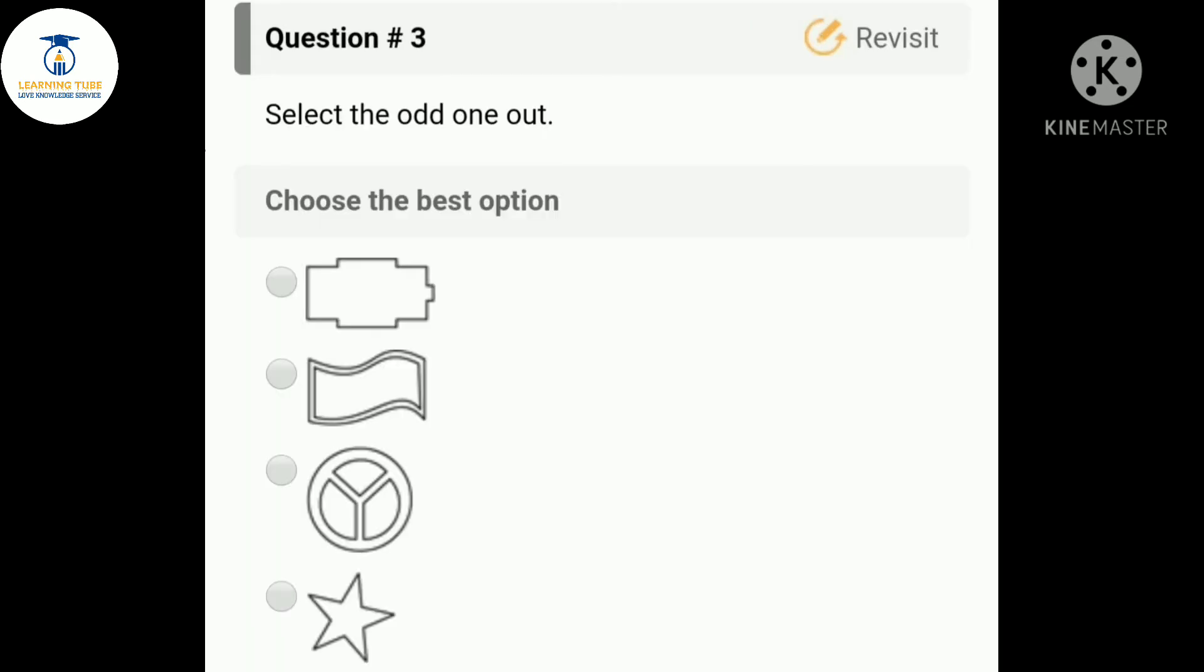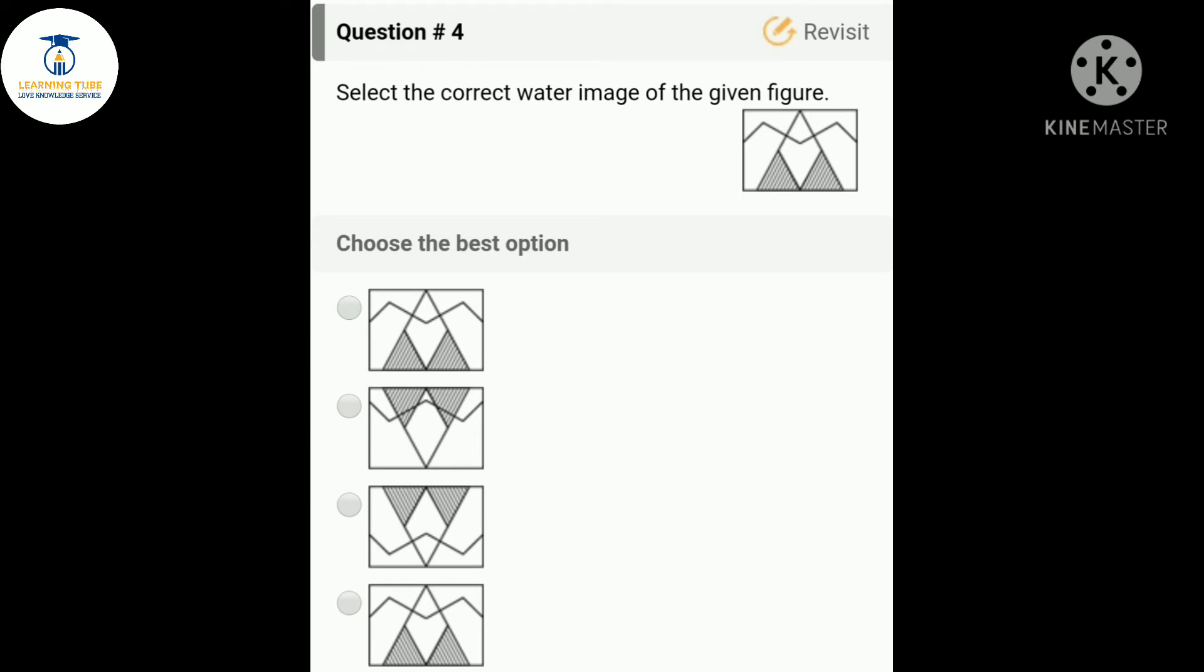The third question is: select the odd one out. You can see that here are four figures. Without the first figure, all three figures have symmetry lines. If we cut these figures by straight lines, then they are divided into two equal parts. So option A is the odd one out from all the four figures.